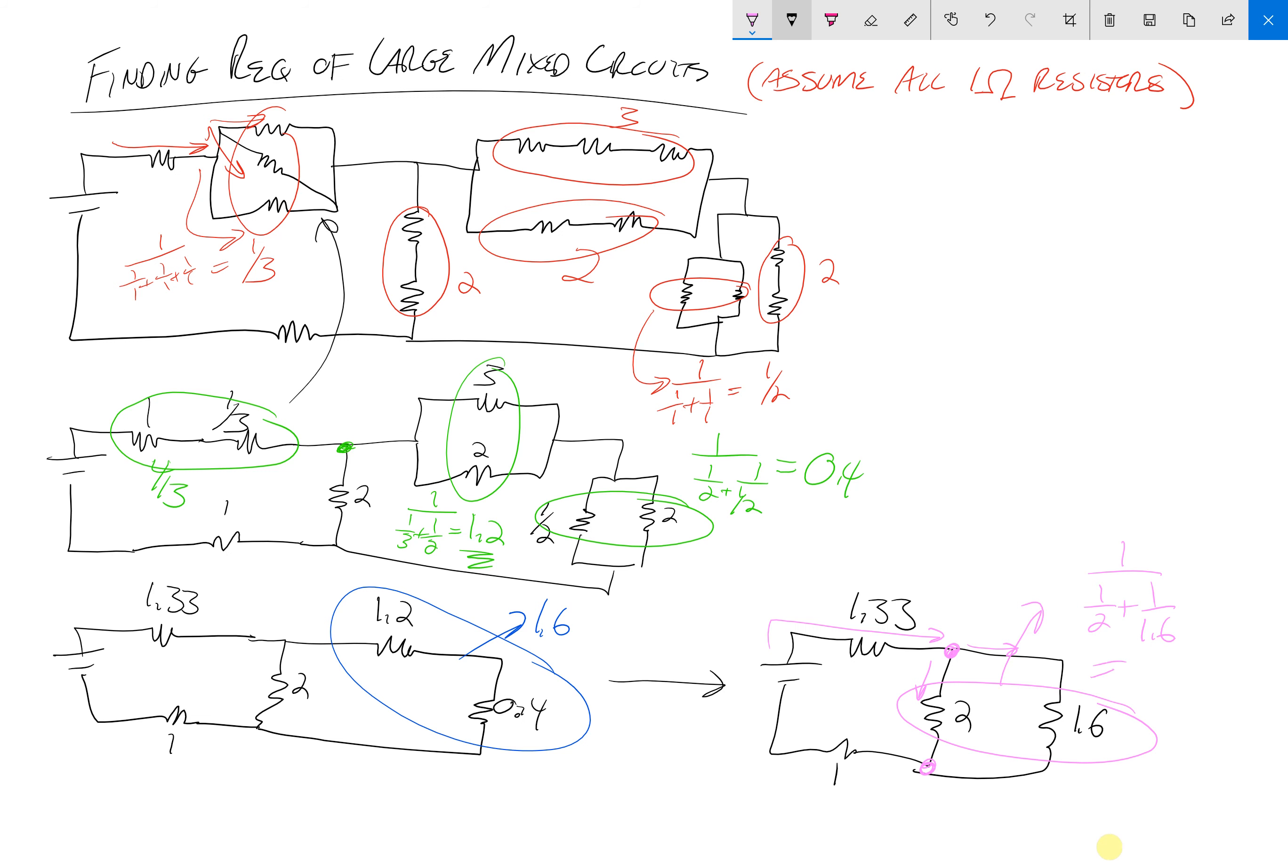I hope that's correct. So that equals 0.89, and then I'm going to redraw it one more time. We have source, we have 1.33, we have 0.89, and we have the 1. So 1.33, 0.89, and the 1.